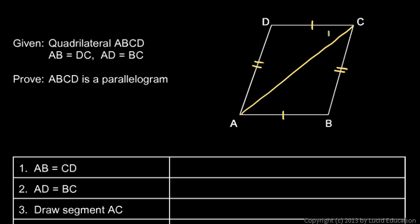Once that's shown, look at this angle here. I'm going to call these angle 1 and angle 2. Those can be thought of as alternate interior angles. If you think of the line determined by DC and the line determined by AB, angle 1 and angle 2 are alternate interior angles. We already have a theorem that says if the alternate interior angles are equal, then the lines are parallel — so those two sides of the quadrilateral must be parallel.